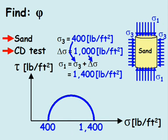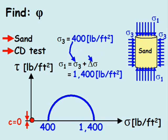But we do know that the soil is sand in a consolidated-drained condition, which means the cohesion is zero, and the rupture line passes through the origin of the graph.